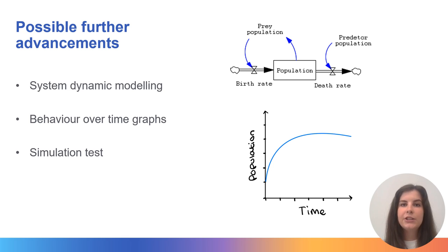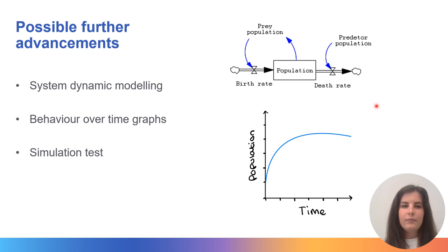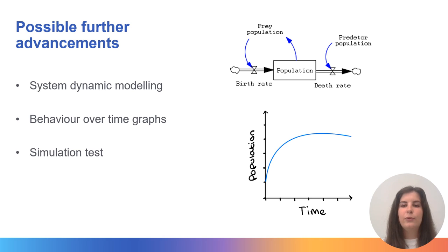The data you can use can either be real data or assumptions. Once you've made your model, you can produce behaviour over time graphs to see how a particular variable changes over time. This can allow simulations to be performed where you can see how changes to the scenario impact the overall system for better or for worse.